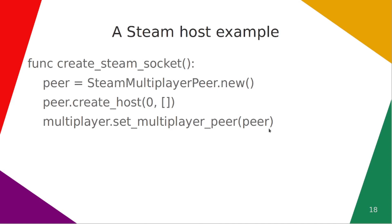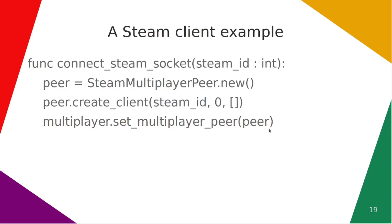To create a client, you do something very similar, but remember that Steam Multiplayer Peer uses a Steam ID and lets the client find the socket. So that is what we are passing in here — connect the Steam socket to this Steam ID, which we are passing in. The rest of it will be handled under the hood, which is great. And then lastly, remember to set your multiplayer_peer.